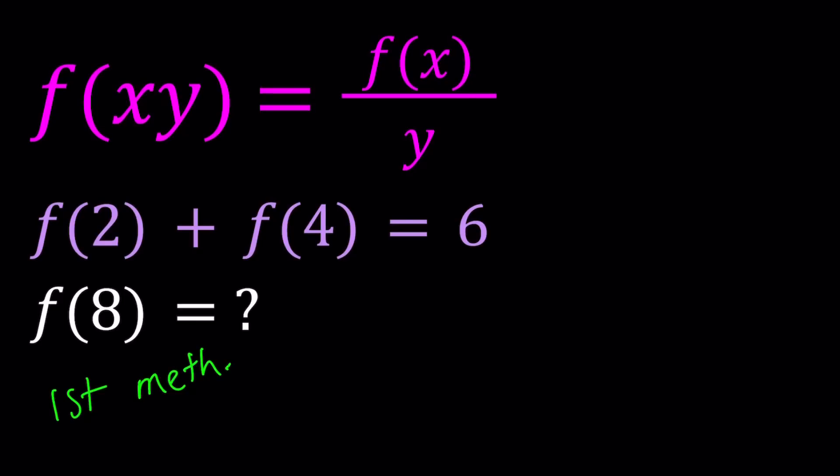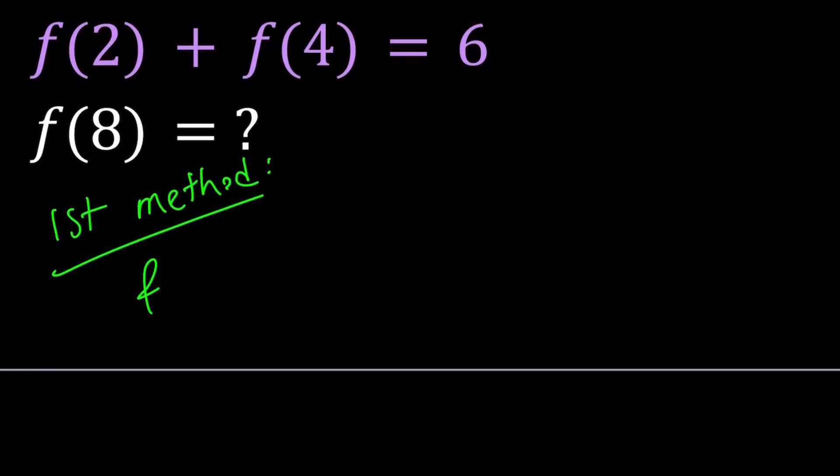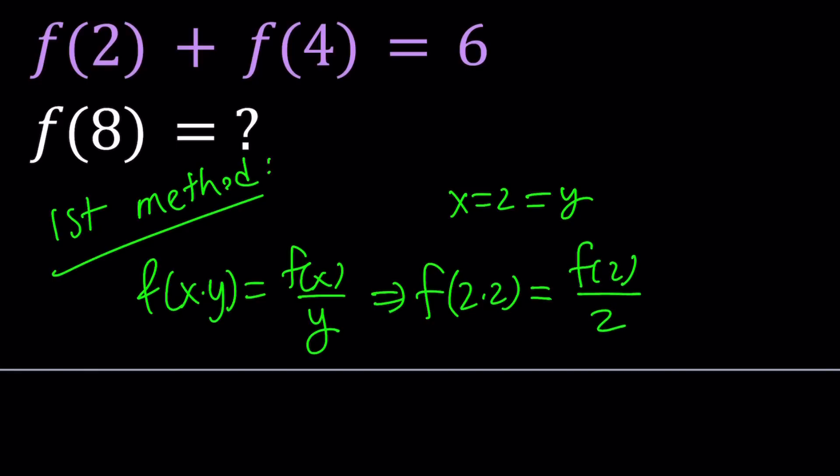First method. Since I'm dealing with f(2) and f(4), I'd like to replace x and y with 2. So we have f(xy) equals f(x) over y. By the way, with the second method, we're going to find how f(x) can be expressed in terms of x, which is going to be more fun. So here I'm going to replace x with 2 and y with 2. If you do that, we're going to get f(2 times 2). By the way, I forgot to say, but this equation is true for all x and y values, but 0 is an exception.